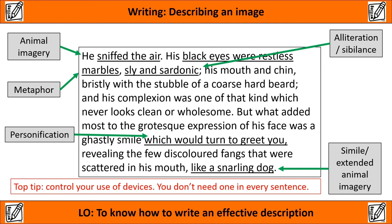I'm going to give you a top tip here. I have put quite a variety of devices within this one paragraph, but what you need to do when you write your description is really control your use of devices. You do not need one in every sentence — it's not going to be an effective description if we have a simile on every line. Think about whether they add to the effectiveness of your description and place them accordingly.